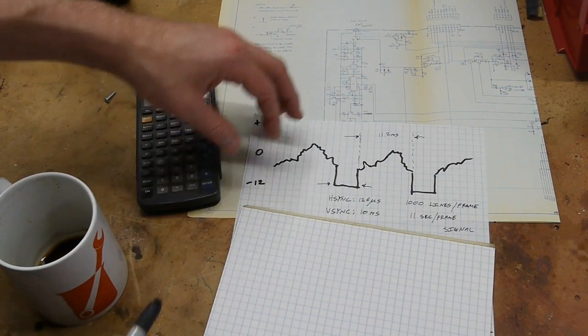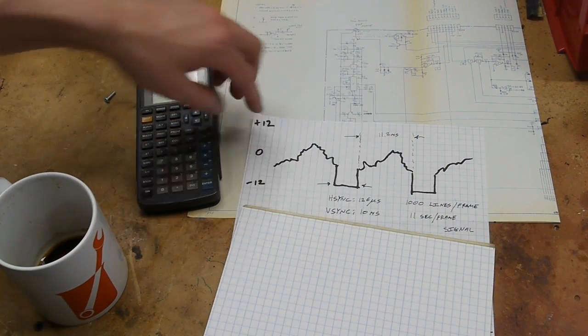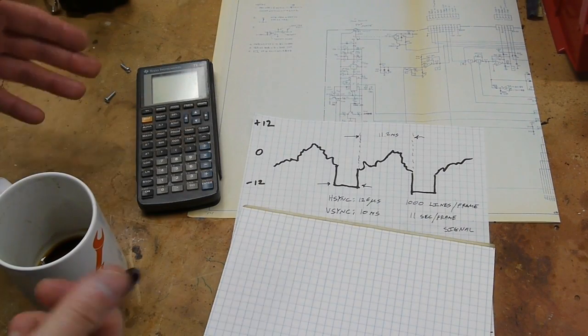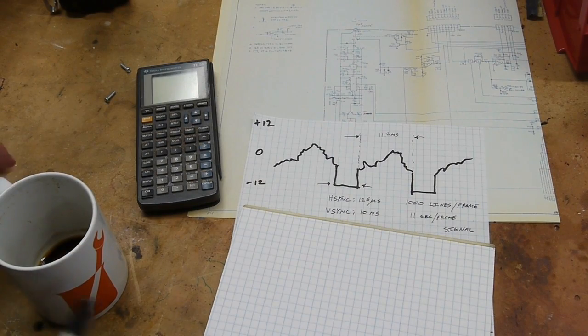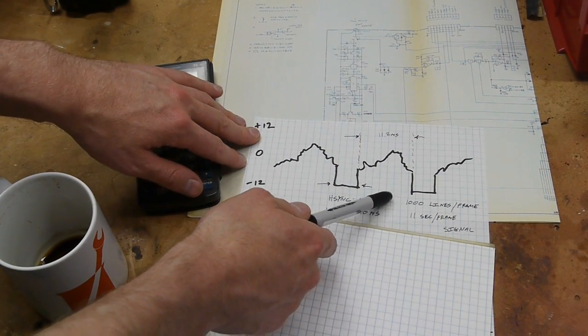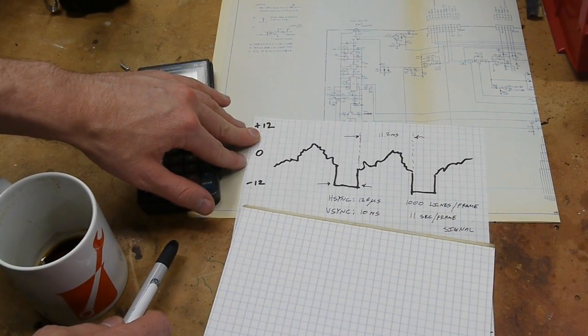If we know what the pulses are supposed to be and we're listening to this signal, we can figure out everything we need to reconstruct the frame. This comes out to about a thousand lines per frame, so the whole thing takes about 11 seconds.